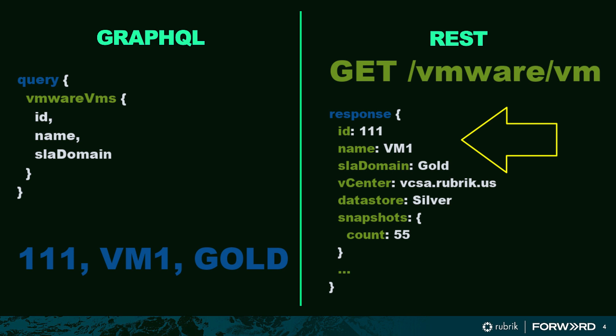We see the ID, we see the name, we see the SLA domain, but we also get a whole bunch of other data back that we either don't need or really don't care about, whereas GraphQL gave us only what we asked for.